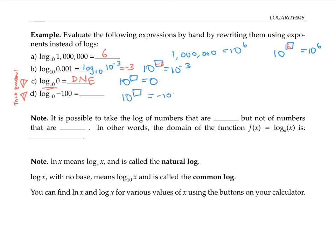The same thing happens with log base 10 of negative 100 — we're asking 10 to what power equals negative 100, and there's no exponent that will work. More generally, it's possible to take the log of numbers that are greater than zero, but not for numbers that are less than or equal to zero. In other words, the domain of the function log base a of x, no matter what base you're using for a, is going to be all positive numbers.